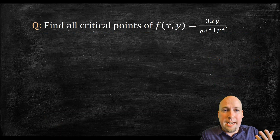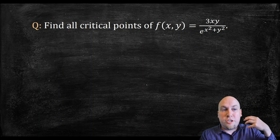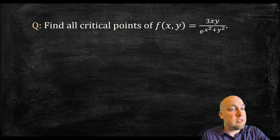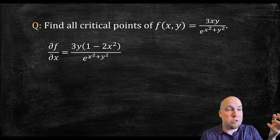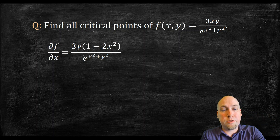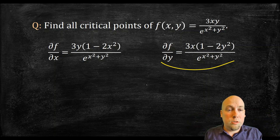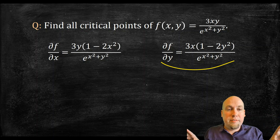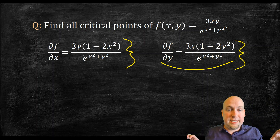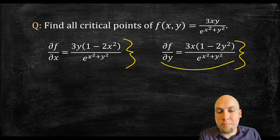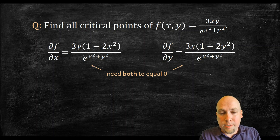Let's go through another example to highlight these different types of critical points. This function has a whole bunch of different critical points. The function is f(x, y) = 3xy over e to the x squared plus y squared. The way to find the critical points is the same: take the partial derivatives and set them both equal to zero. Take the x partial derivative and you get one expression, and the y partial derivative gives you another via a similar calculation — both found via the quotient rule or the product rule combined with the chain rule. I've factored both partial derivatives as much as possible, and you'll want to do that before the next step.